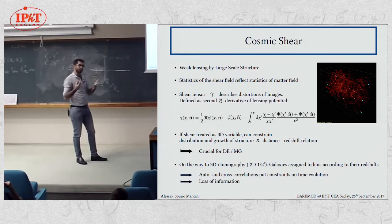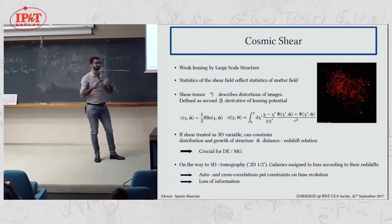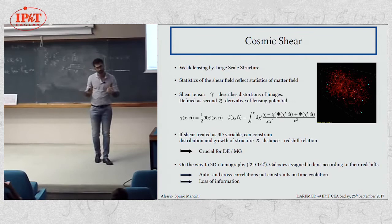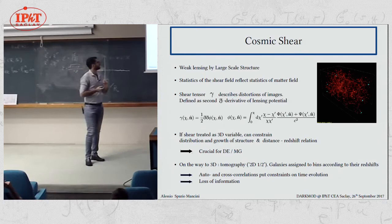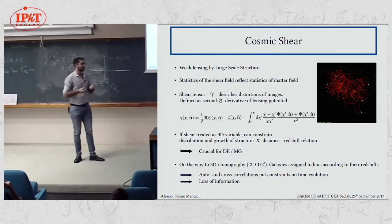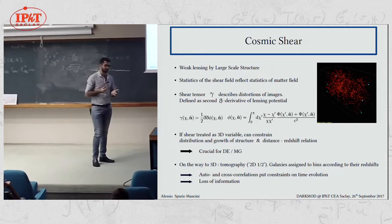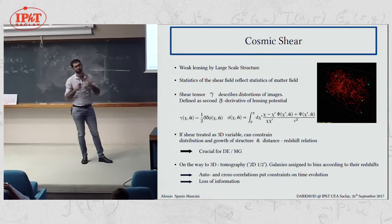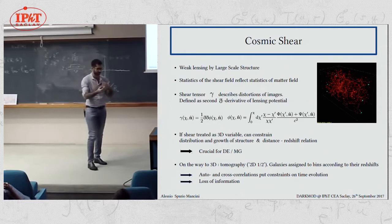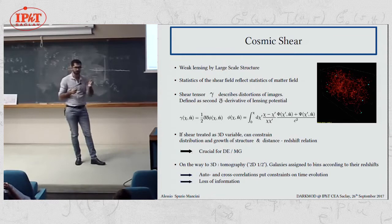The power of lensing is that people say it is sensitive to the distribution of matter, to the growth of structure, and it's sensitive to the distance redshift relation. But in particular, the point of the growth of structure, which is crucial for dark energy and modified gravity, it's really something true if we consider the shear as a 3D variable. So if we were to consider a purely 2D analysis of lensing, we would lose a lot of information in redshift. So we wouldn't gain much information on a dynamical effect.